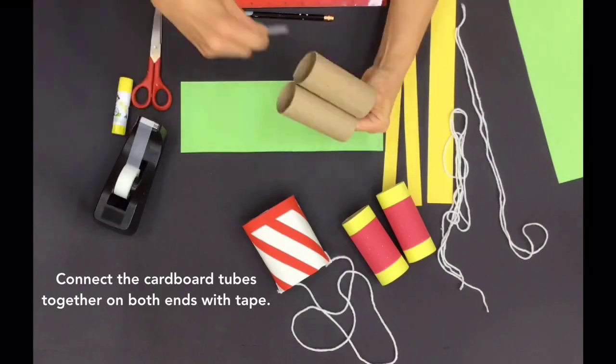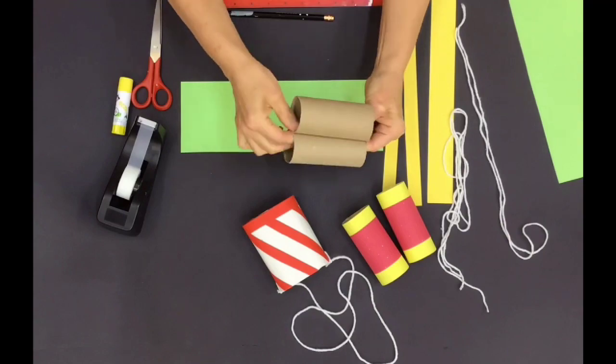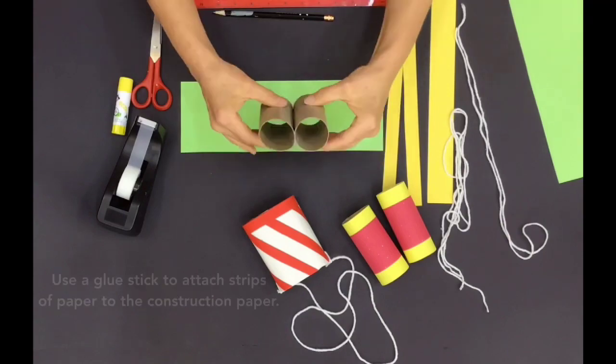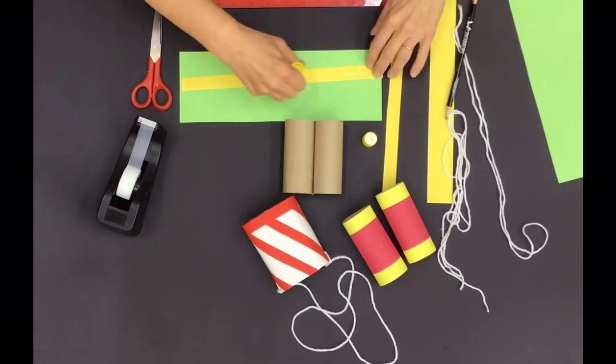Connect the cardboard tubes together on both ends with tape. Use a glue stick to attach strips of paper to the construction paper.